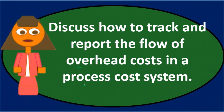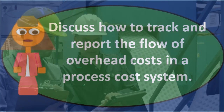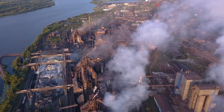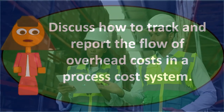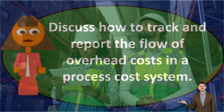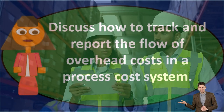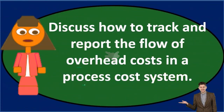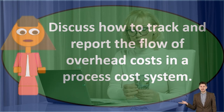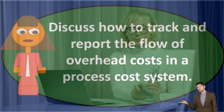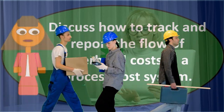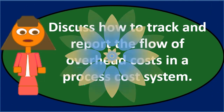The process cost system is one of the two major systems typically used in a manufacturing company — the other being a job cost system. Manufacturing companies actually make inventory, as opposed to service or merchandising companies. In a process cost system, we're typically making very similar or identical items, and we track inventory through the system by process. Inventory costs typically include raw materials, overhead, and labor.